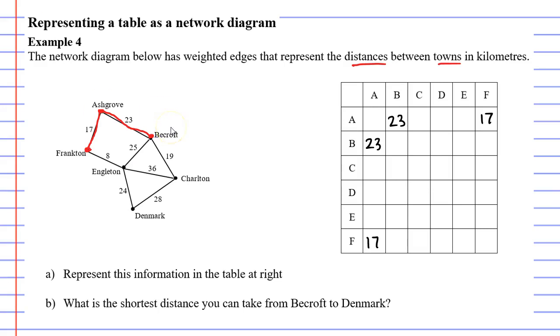All right, now let's focus on Beecroft. We've already got the edge from Beecroft to Ashgrove, but we also need to go from Beecroft to Engleton and Beecroft to Charlton. We can see B and C lining up here. Notice that we get two of them each time. Then from Beecroft to Engleton, B to E, is 25, so from B to E is here and from B to E is 25 here as well.